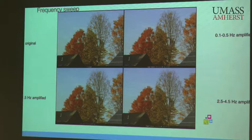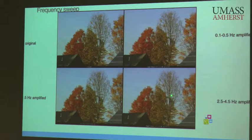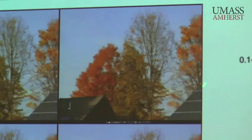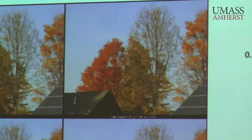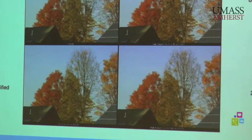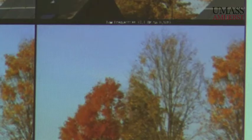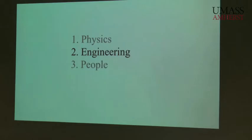Here's a video from behind my house on a quiet day with trees. Different temporal frequency bands are applied to the original. Here's the low frequency oscillations (0.1 to 0.5 Hz) amplified—you can see branches moving. Here's mid-band, and finally 2.5 to 4 Hz amplified, where you can see leaves shimmering even in this very low-wind scene.